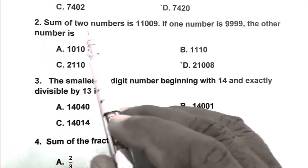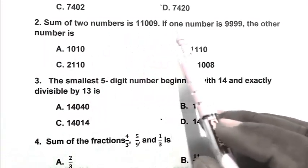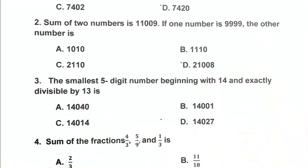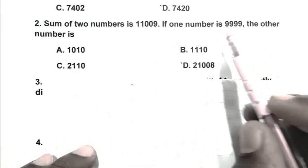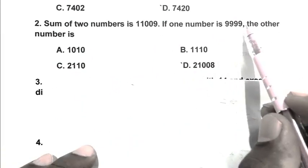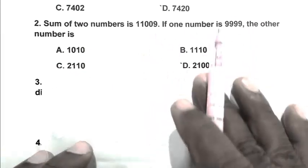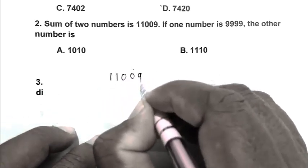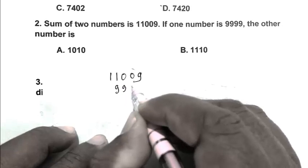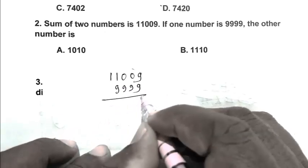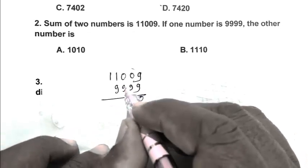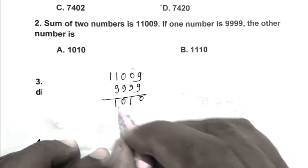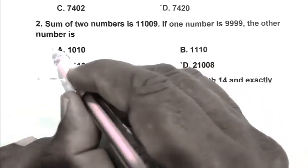Question number 2. Sum of 2 numbers is 11,009. If one number is 9,999, the other number is. So friend, we have to subtract 9,999 from 11,009. So we write it 11,009. We subtract 9,999. So friend, 0, 1, 0, 1. So A is the right answer.